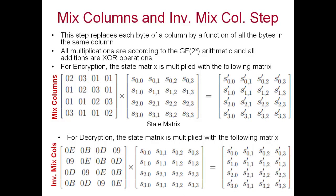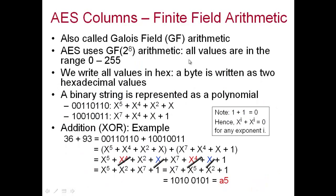In the mix columns step, each byte of a column is replaced by a function that takes into account all bytes in the same column. To do this, we use a fixed matrix with specific hexadecimal entries and multiply it by the state array before the mix column step. For decryption, we use a different fixed inverse matrix. This multiplication is done in GF(2^8) arithmetic, also called finite field or Galois field arithmetic.